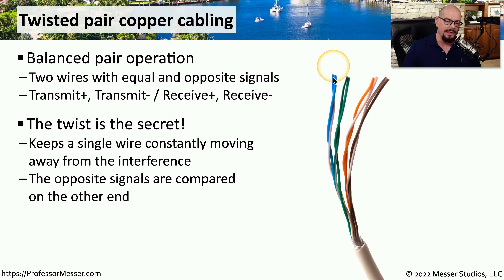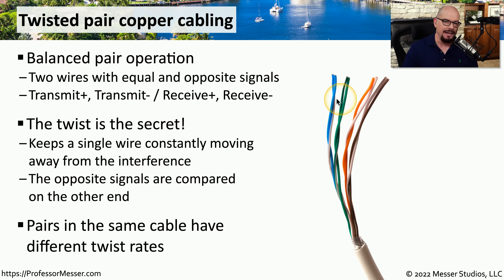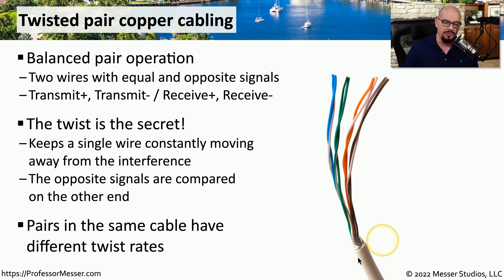When these signals arrive at the other end, they are compared with each other, and any interference that occurred through the wire is identified because we now have two cables with different signals to compare. Each of these pairs also has a different twist rate — a tighter twist on one pair than another — so if there's interference, all four pairs will have different signals on the other end because they are all at different twist rates.